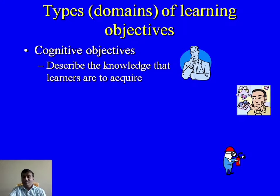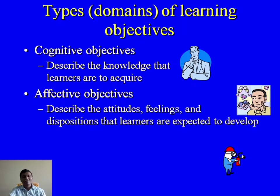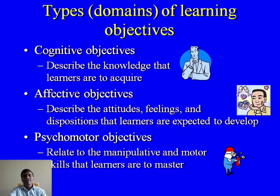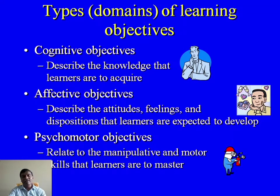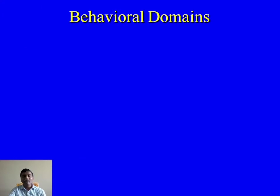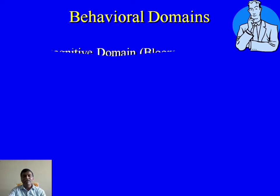The types and domains of learning objectives help us categorize terms in the form of behavioral aspects. The first is cognitive objectives, which describe the knowledge that learners are to acquire. Affective objectives describe the attitudes, feelings, and dispositions learners are expected to develop. Psychomotor objectives relate to the manipulative and motor skills learners are to master.